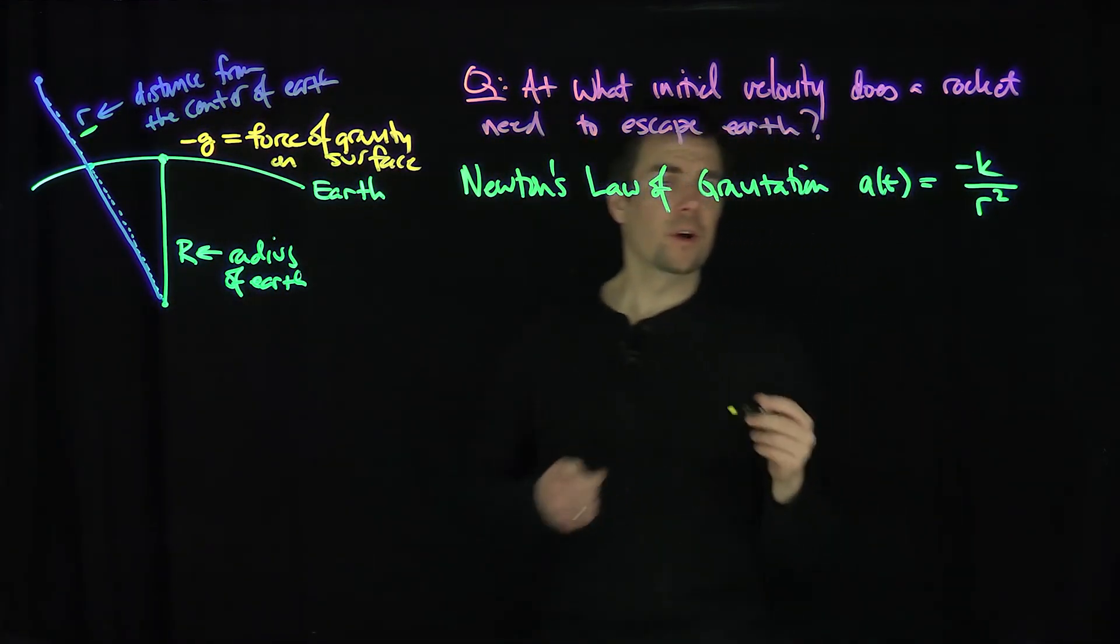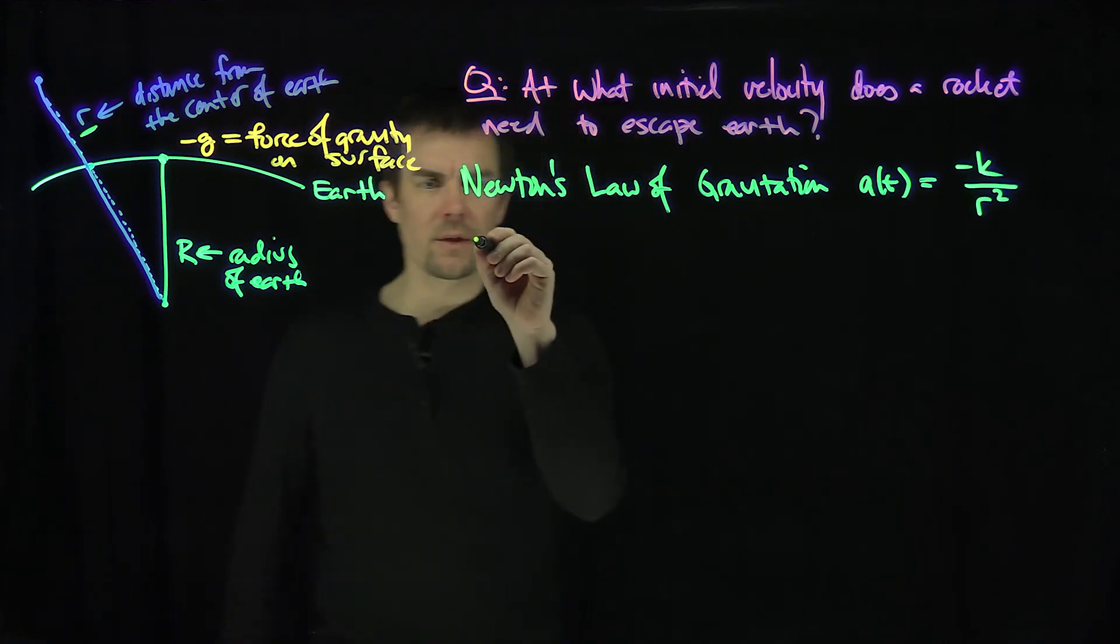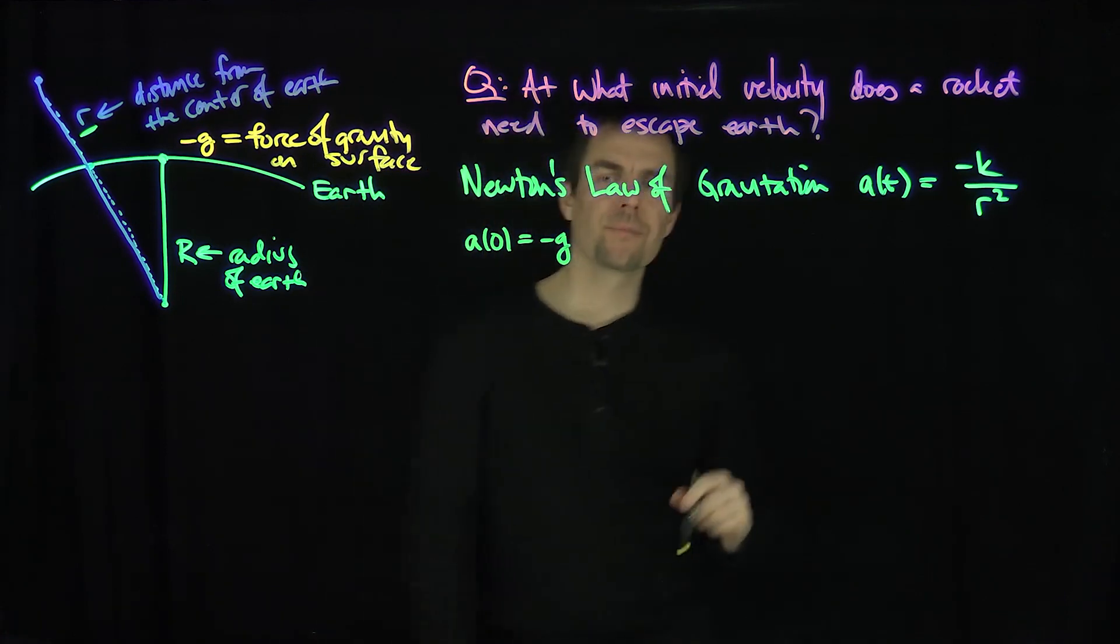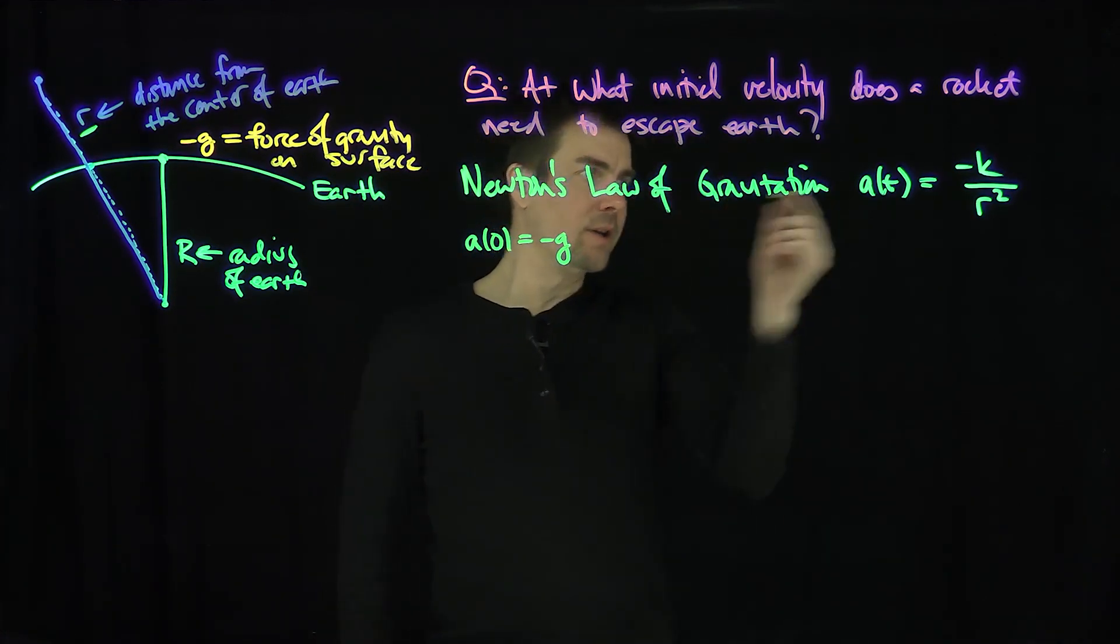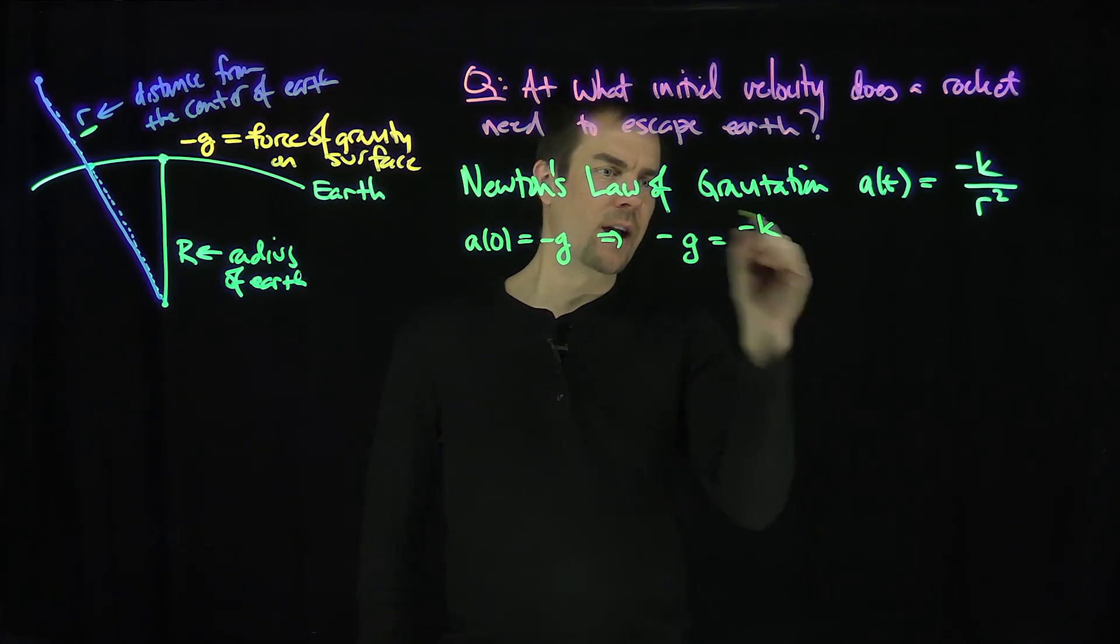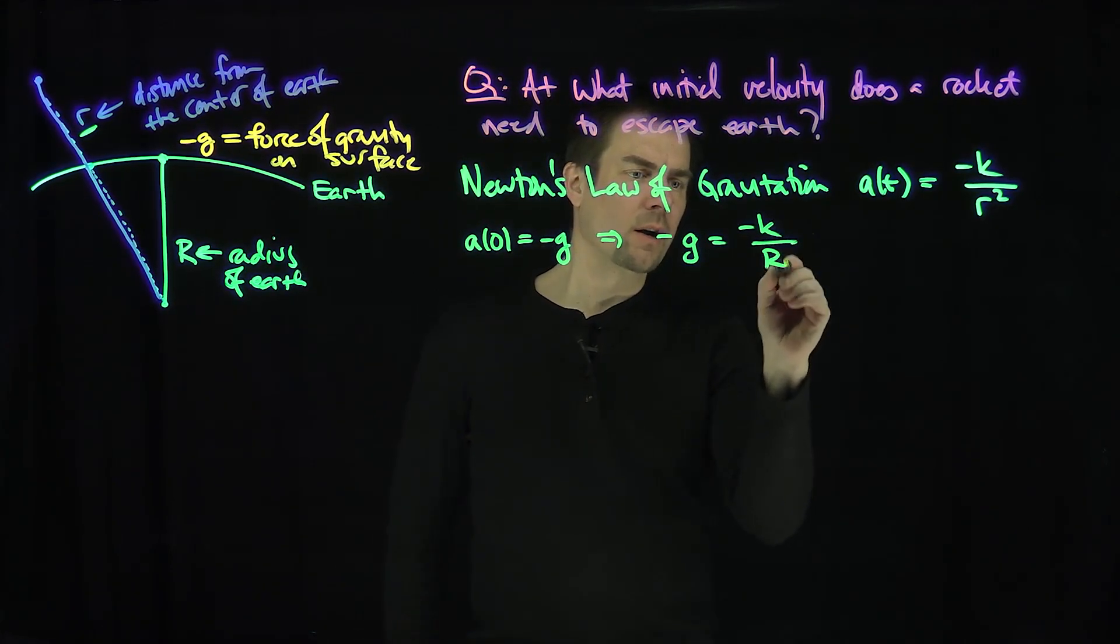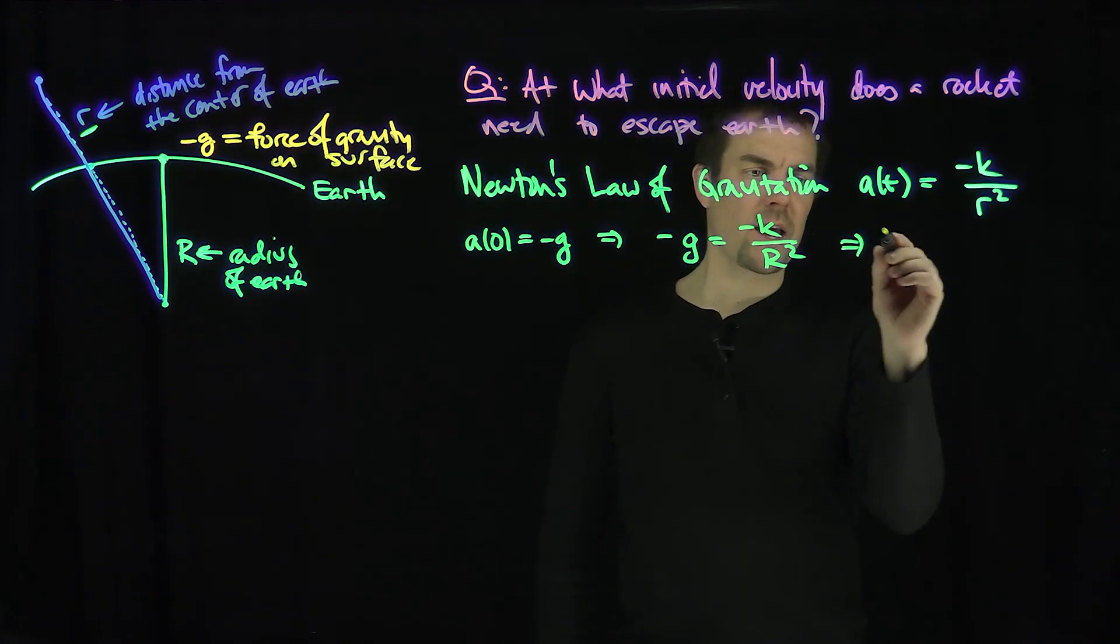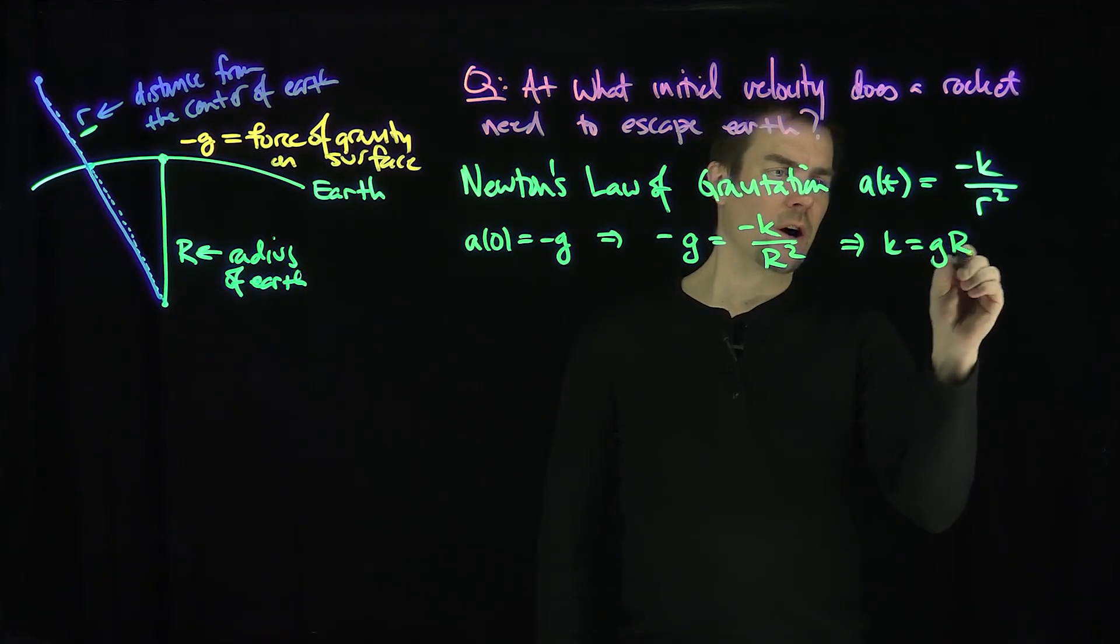Now we know that when I plug in t equals 0, I know that it's going to start on the surface of Earth, so a(0) is negative g, and so that tells me what? We have that negative g equals negative k over R capital squared, the radius of Earth squared, so that allows me to solve for k. So k equals gR squared.